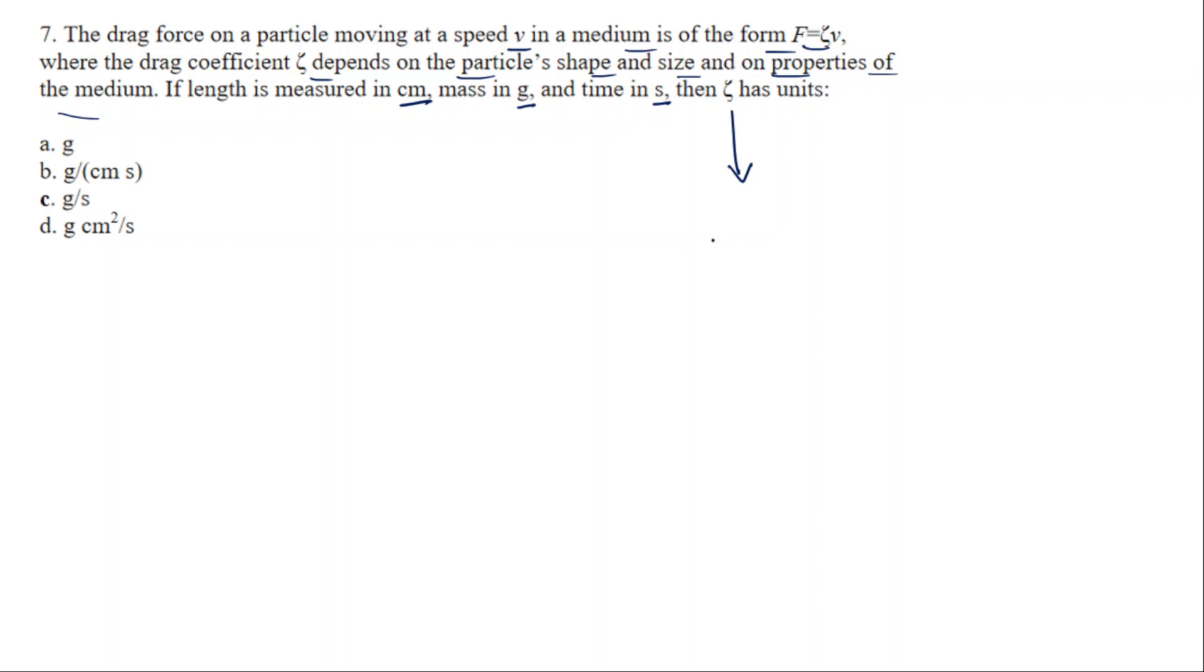So ζ equals force divided by velocity. The unit of force is mass times acceleration. Force equals mass times acceleration, where mass is in grams and acceleration is in centimeters per second squared (cm/s²).